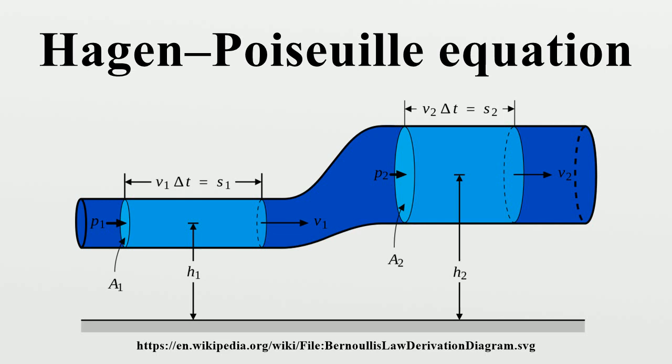Poiseuille's equation for compressible fluids: For a compressible fluid in a tube, the volumetric flow rate and the linear velocity is not constant along the tube. The flow is usually expressed at outlet pressure. As fluid is compressed or expands, work is done and the fluid is heated or cooled.